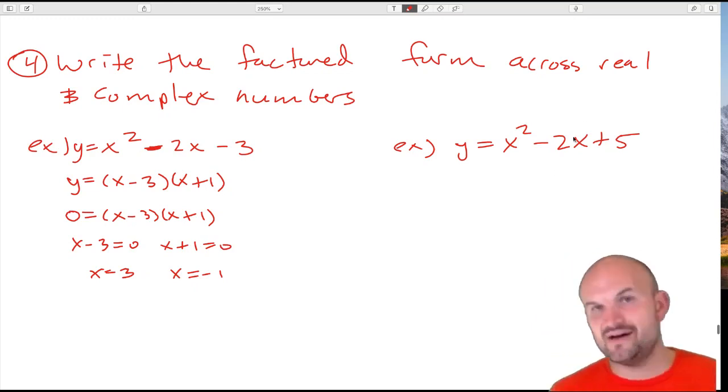Since this one is not obvious what the factored form is—I'm not seeing any two numbers that multiply to give you 5 and add to give you negative 2—what I'm going to do is find the solutions and then write the factors from the solutions. To find the solutions, I'll set this equal to zero and use the quadratic formula.